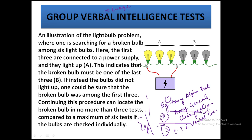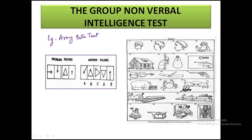There is also a group non-verbal test. An example is the Army Beta Test, which is a non-verbal test that was designed for soldiers who were not highly literate. Another example is the Chicago Non-Verbal Test, which is used for children aged 12 to 13 years to judge their IQ. There is also the CIE Non-Verbal Test, which is used in India basically for Hindi-medium students. In these tests, no language is used — only instructions are given.